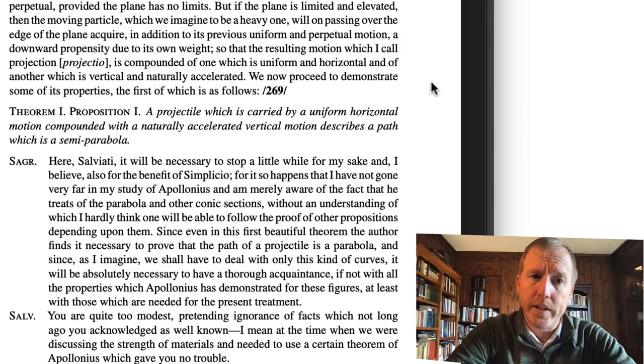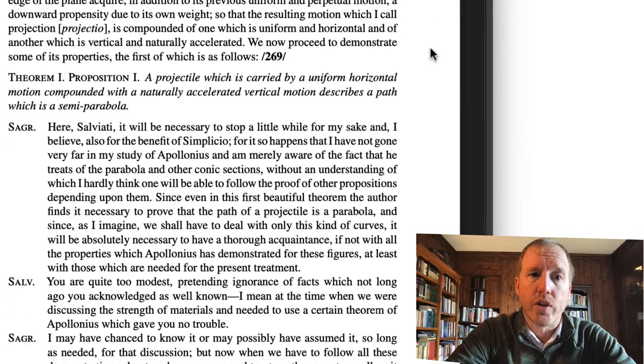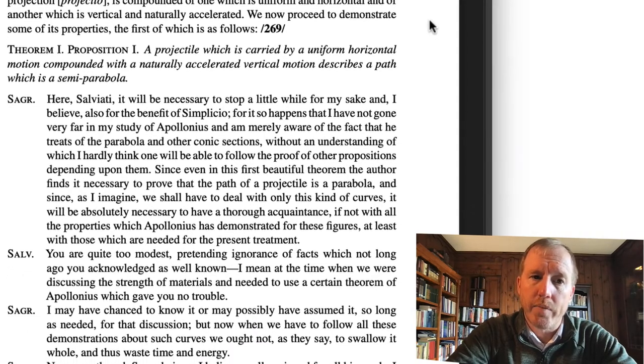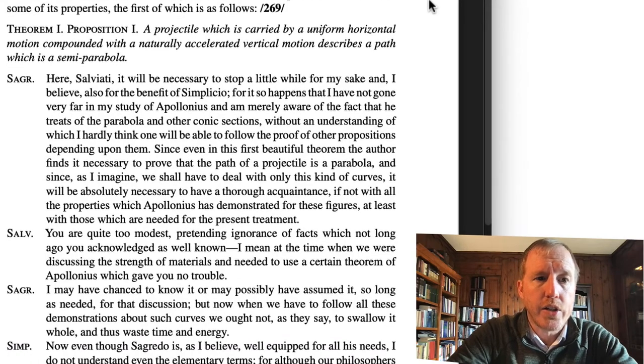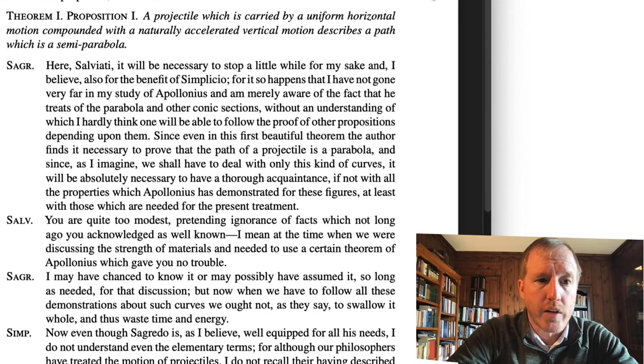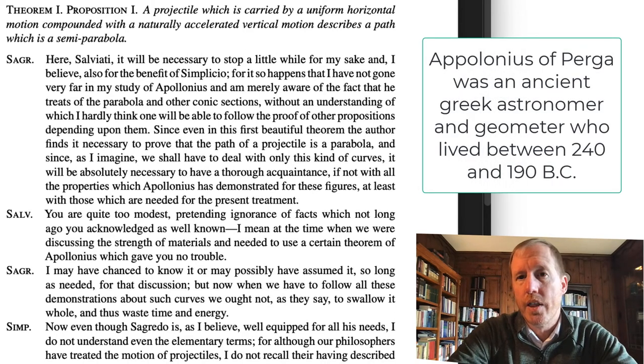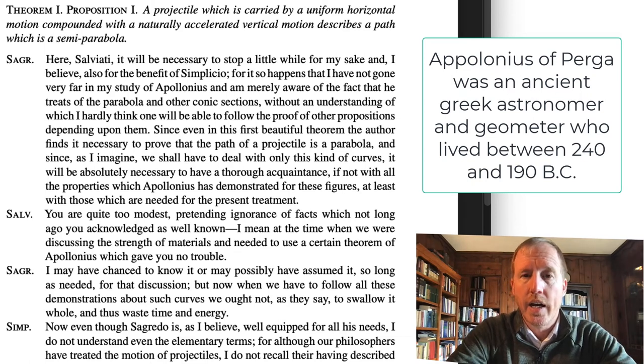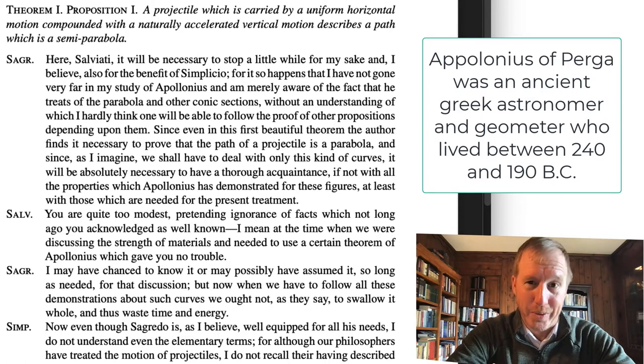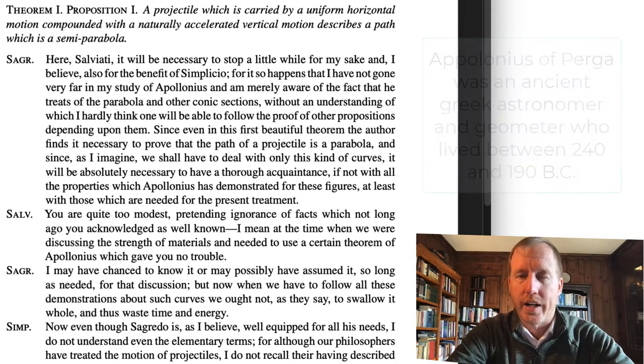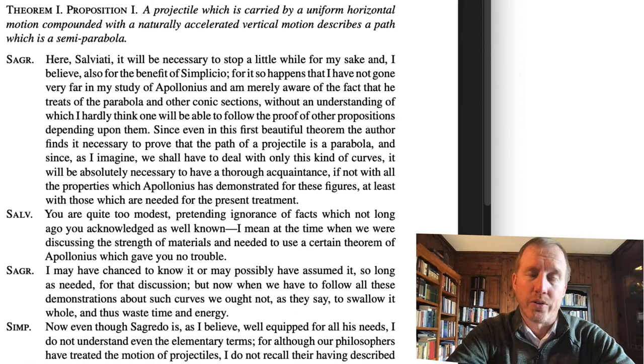Segredo says: Here, Salviati, it will be necessary to stop a little while for my sake, and I believe also for the benefit of Simplicio. For it so happens that I have not gone very far in my studies of Apollonius and am merely aware of the fact that he treats of the parabola and other conic sections without an understanding of which I hardly think one will be able to follow the proof of other propositions depending upon them. So he's talking here about an ancient Greek mathematician named Apollonius who wrote about what are called the conic sections. The conic sections are if you take a cone and you cut it in different ways, it forms different curves. And this was a standard geometry textbook. Segredo's saying, wait a minute, I haven't read Apollonius in a long time. So if you're going to be claiming that this thing undergoes parabolic motion, and I remember from Apollonius that a parabola is one of the conic sections, I'm going to have to review this before you get into it. Otherwise, there's no way I'm going to follow what you say.